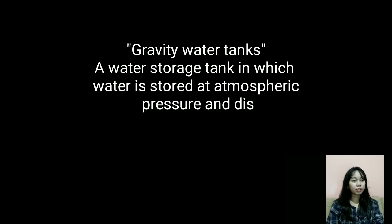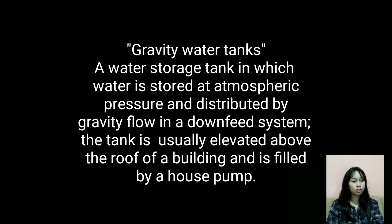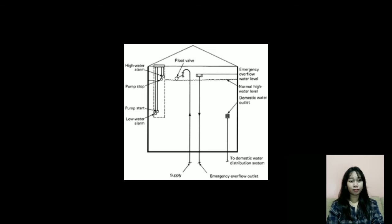Section 606 is about gravity supply tanks. A gravity water tank is a water storage tank in which water is stored at atmospheric pressure and distributed by gravity flow in a down-feed system. The tank is usually elevated above the roof of a building and is filled by a house pump. Here is an example of gravity water tanks.